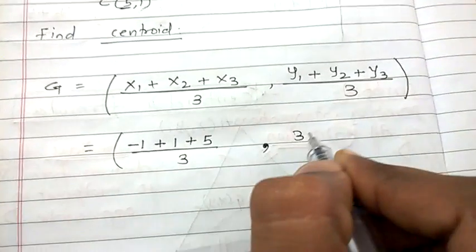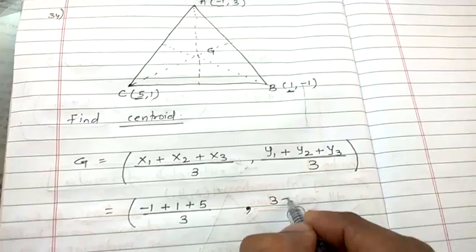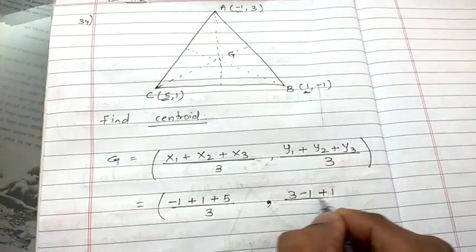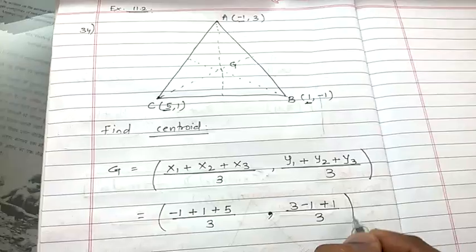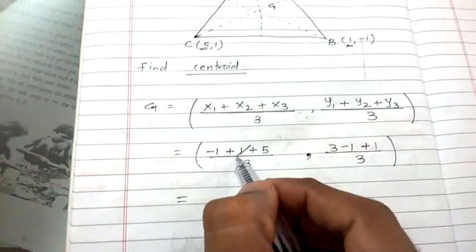3 minus 1 plus 1 upon 3, which would be equals to, this plus 1, and